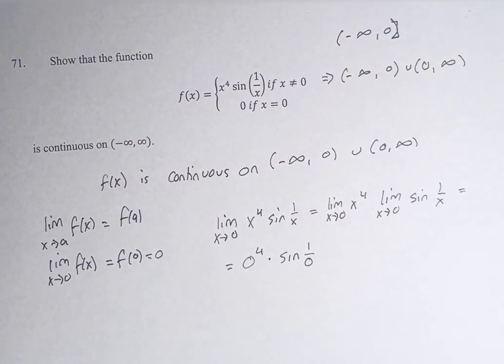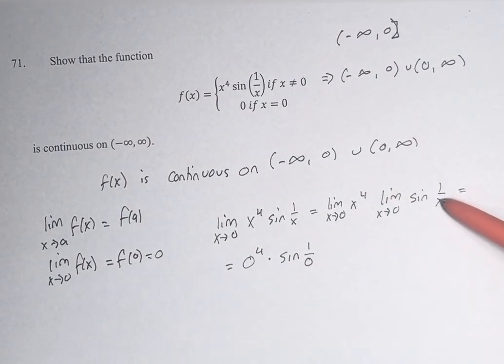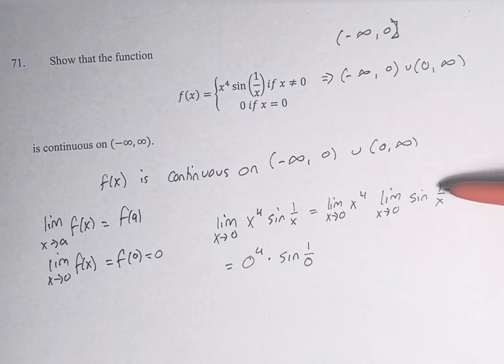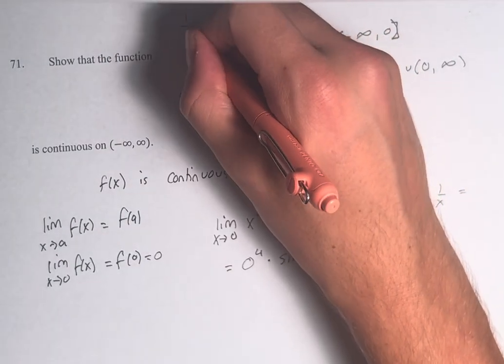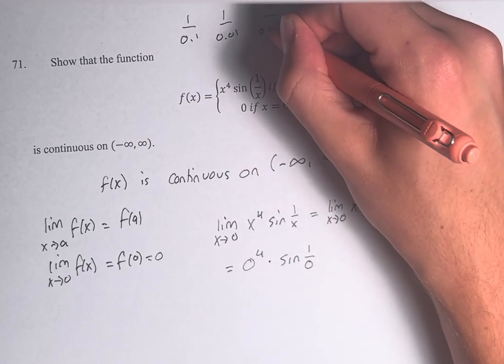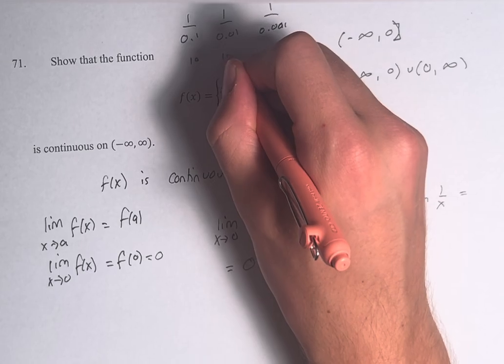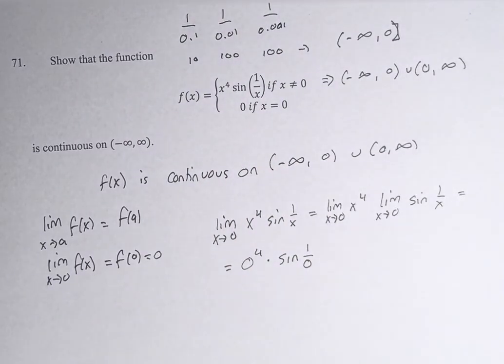And what does this mean? Well, we're not taking values of sine at 1 over 0 itself, right? We're taking it as x approaches 0. And as x approaches 0, 1 over 0 goes from like 1 over 0.1 to 1 over 0.01, 1 over 0.001, right? This becomes 10, 100, 1000, right? It's going off to infinity.